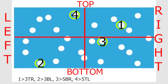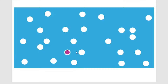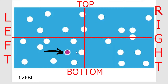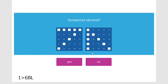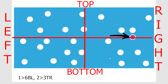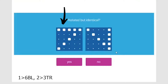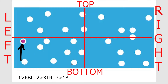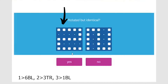Next question set: memory — dot at sixth position, bottom left, so '6BL.' Rotation: left image is number 7; moving right image 90° clockwise also gives 7 — yes, identical. Memory: dot at third position, top right — '3TR.' Rotation: left image is number 7; moving right image anti-clockwise 90° also gives 7 — yes, identical. Memory: dot at first position, bottom left — '1BL.' Rotation: left image is number 2; moving right image anti-clockwise 90° also gives 2 — yes, identical.